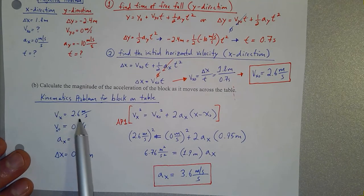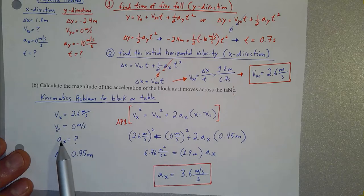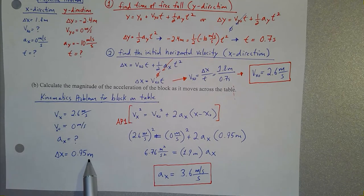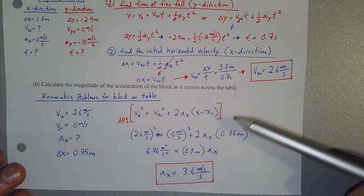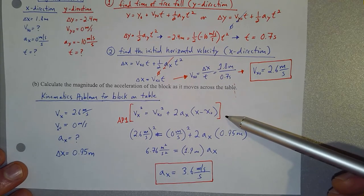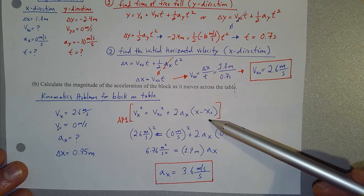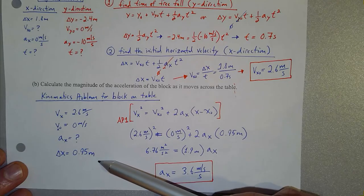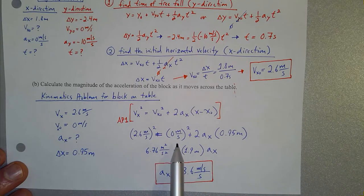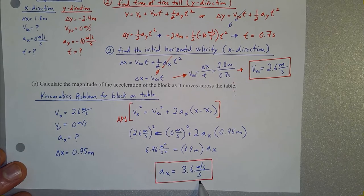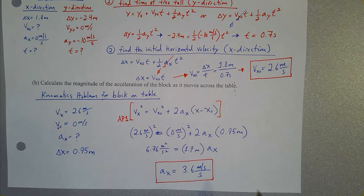The final velocity in the x direction is 2.6 meters per second, the initial velocity is 0, and the displacement is 0.95 meters. Using the kinematic equation: v_f squared equals v_i squared plus 2 times acceleration times delta x. Plugging in the final velocity, initial velocity, and displacement, we find the acceleration is about 3.6 meters per second squared.